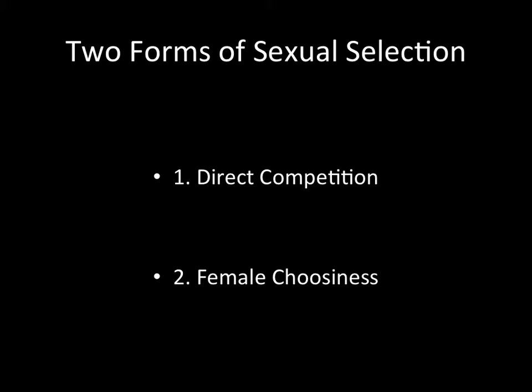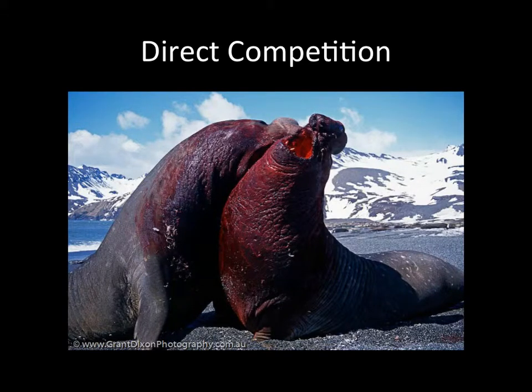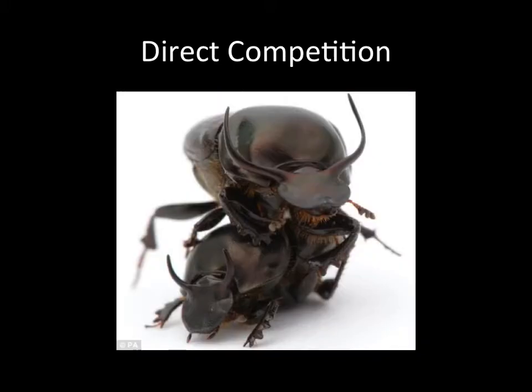There are two forms of sexual selection: direct competition and female choosiness. In direct competition, male elephant seals fight on the beach before females even arrive to battle for mating rights. Birds also guard their territory after mating, competing fiercely to keep a female impregnated only by one male. Insects take a different approach, physically blocking any entrance site to the female after inseminating her.